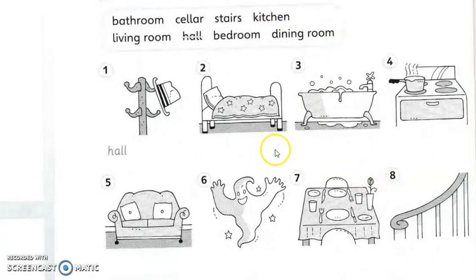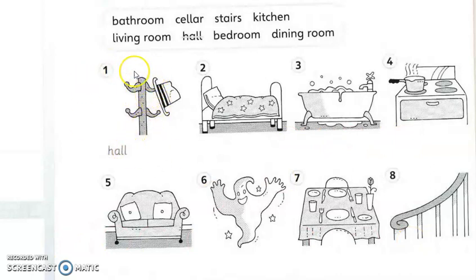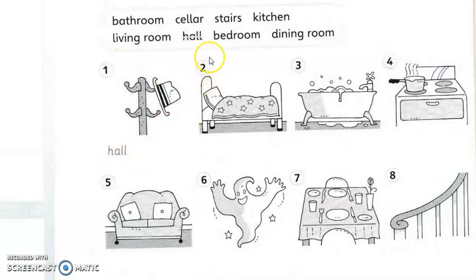You have eight pictures here. From the words given, name all the pictures. Here is the example: this one — the cat — we put 'at hall'. So number one answer is 'at hall'.